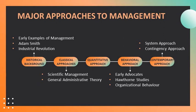Taylor gave four principles of scientific management. First, develop a science of each element of an individual's work to replace the old rule of thumb. Second, scientifically select, and then train, teach, and develop the worker. Third, cooperate with workers wholeheartedly to ensure that all work is done in accordance with the principles of science that have been developed. Fourth, divide work and responsibility between management and workers, and management takes over all work for which it is better fitted than workers.